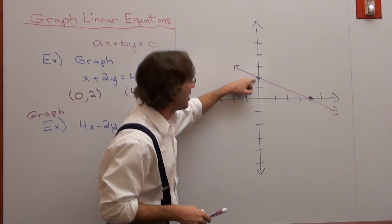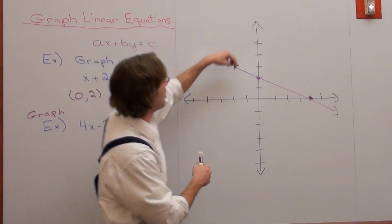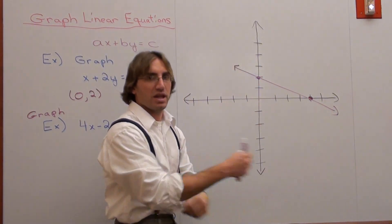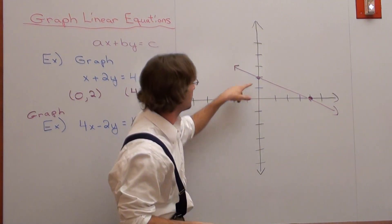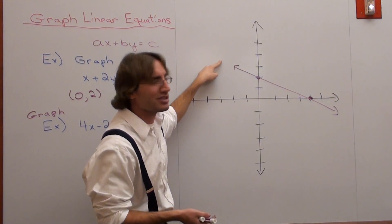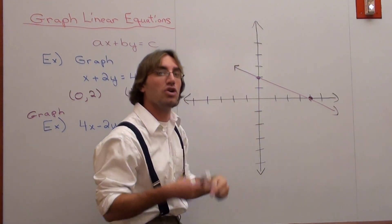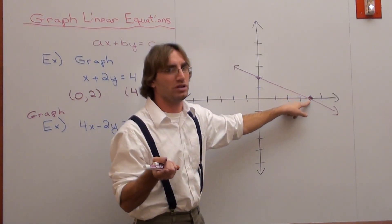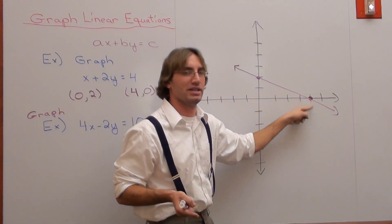This point right here is called the y-intercept, because it intercepts against the y-axis — it actually connects with the y-axis. That's why it's called the y-intercept. And what do you think the other one's called? It's called the x-intercept because it hits the x-axis.